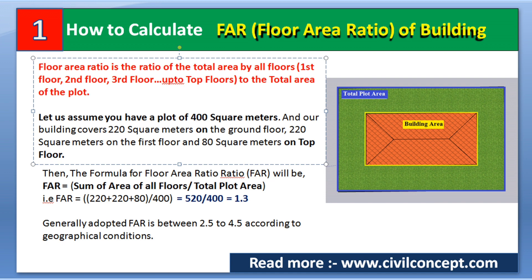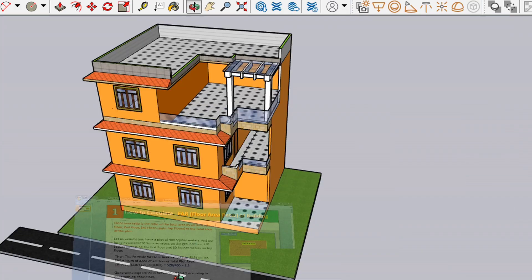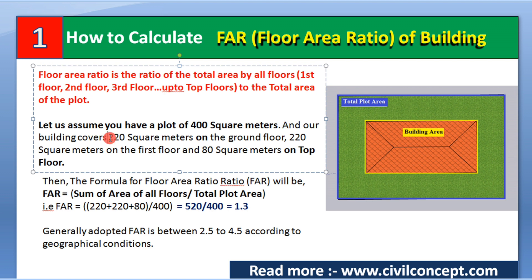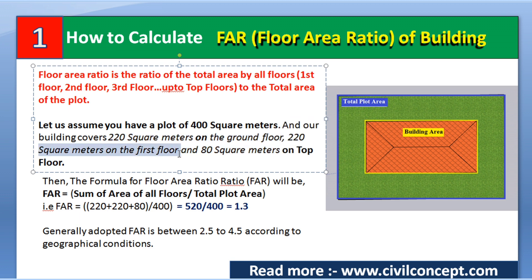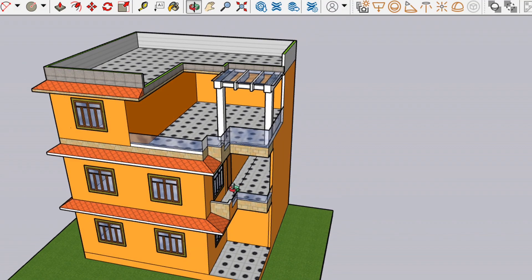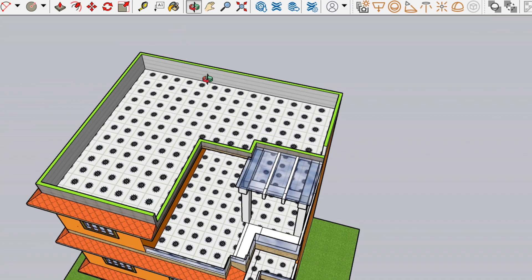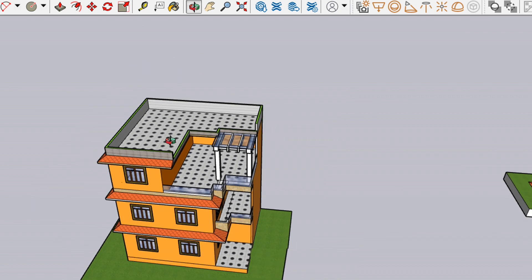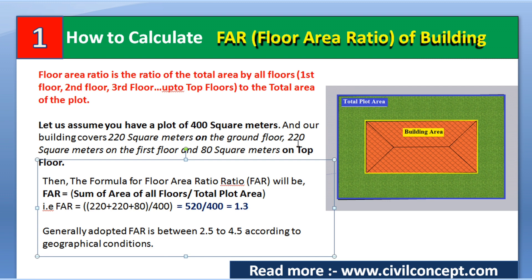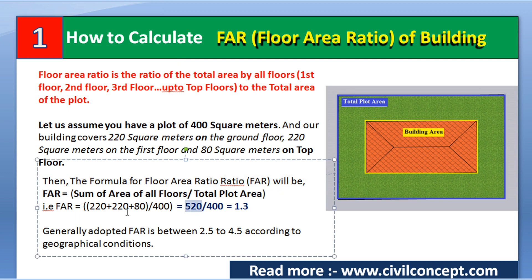Let us assume a plot of 400 square meters. The area of this plot is 400 square meters. The building covers 220 square meters on the ground floor, 220 square meters on the first floor, and 80 square meters on the top floor. When we add all three areas — 220 + 220 + 80 — we get 520 square meters.